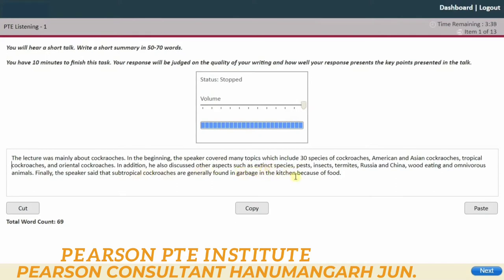Okay, that's correct. Insects, termites, Russia and China, wood eating and omnivorous animals. Finally, the speaker said that subtropical cockroaches are generally... okay, it looks okay to me.